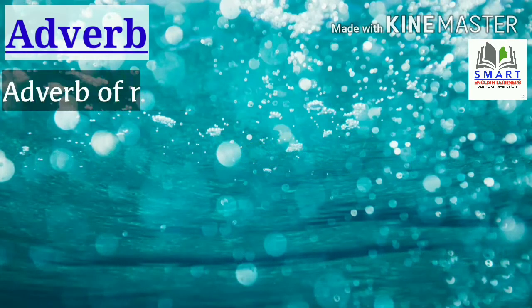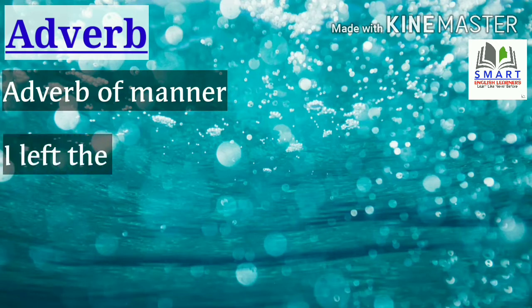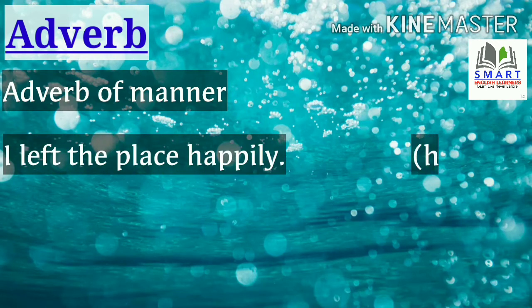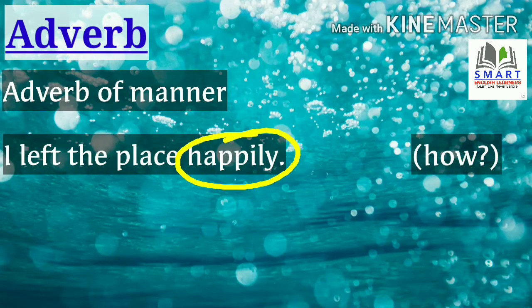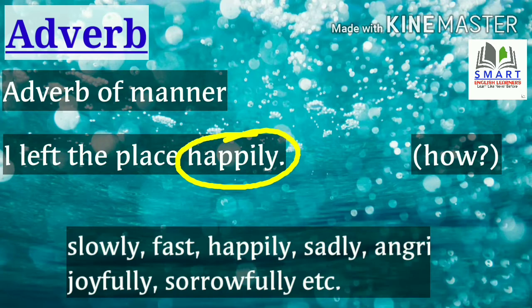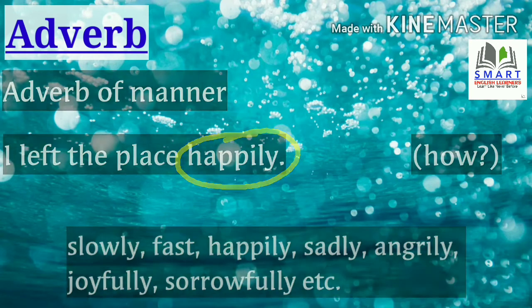Some adverbs give information about manner. For example, 'I left the place happily.' How did I leave? Happily. Hence, happily is an adverb of manner. These adverbs answer the question how. Some other examples: slowly, fast, happily, sadly, angrily, joyfully, sorrowfully, etc.